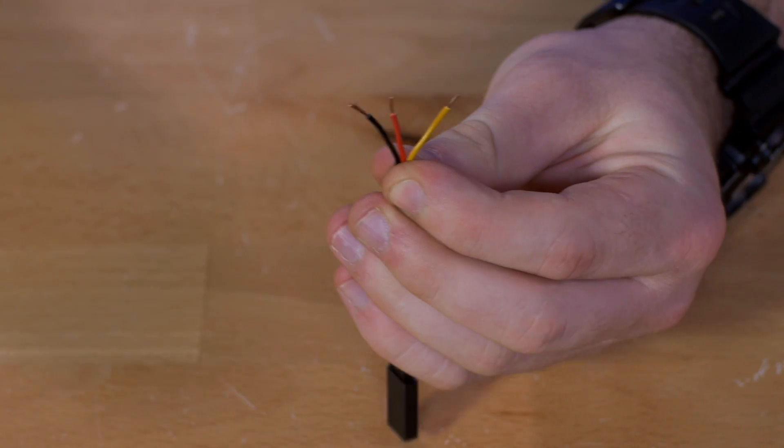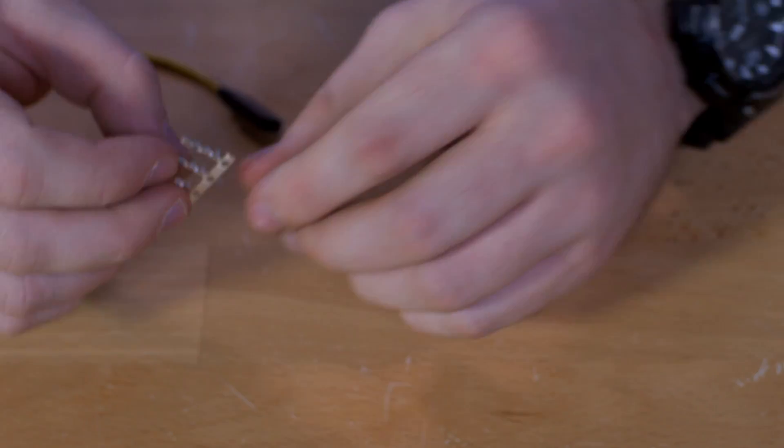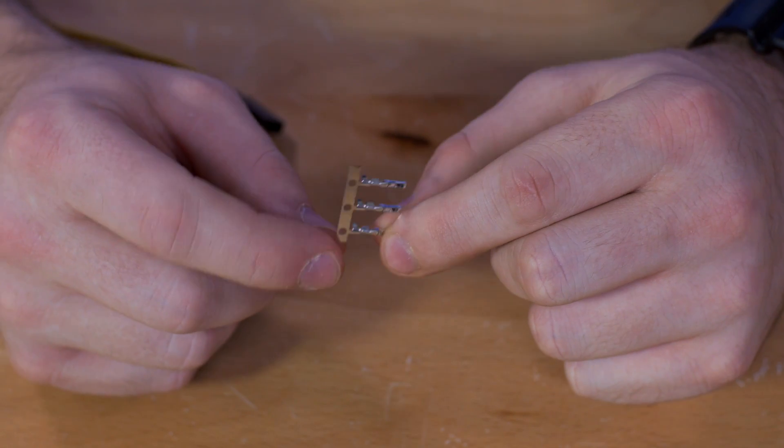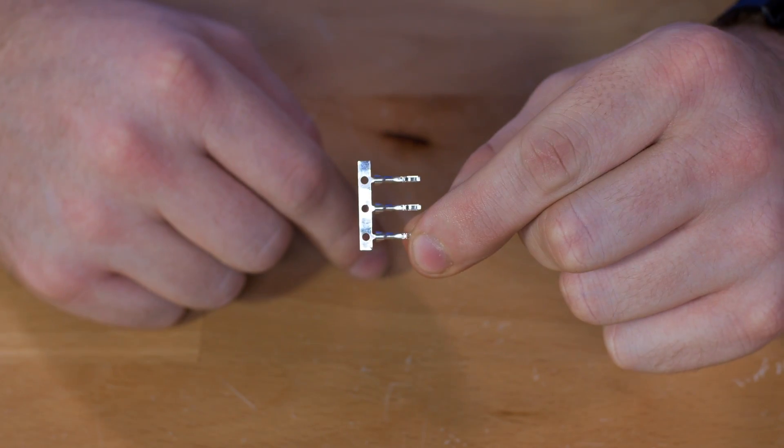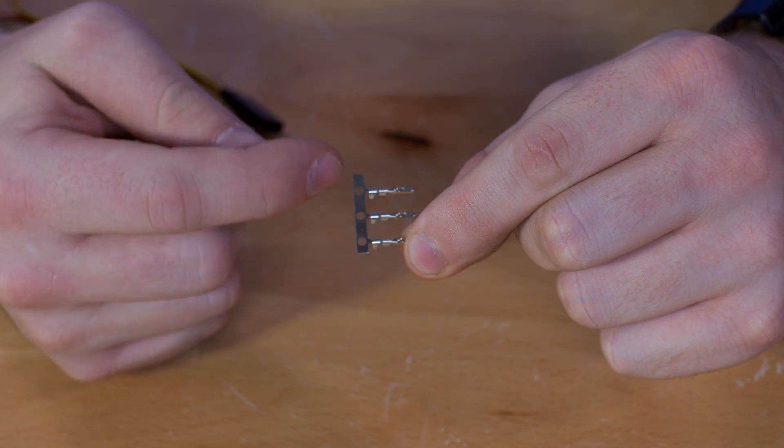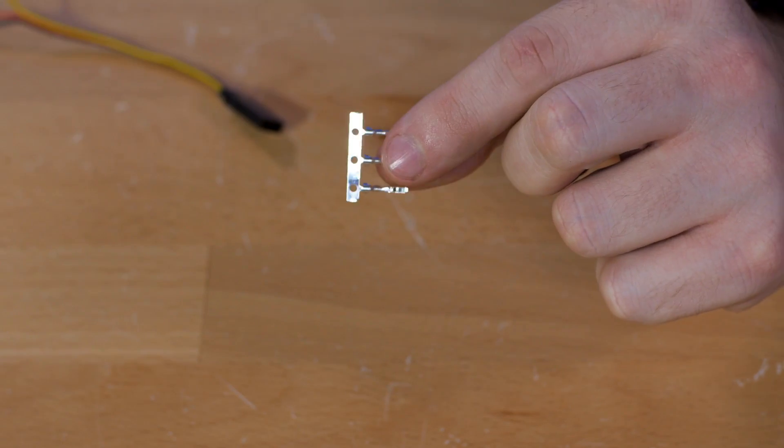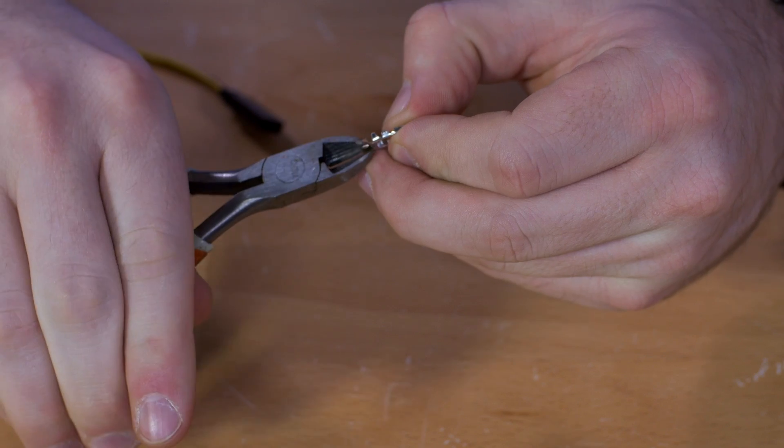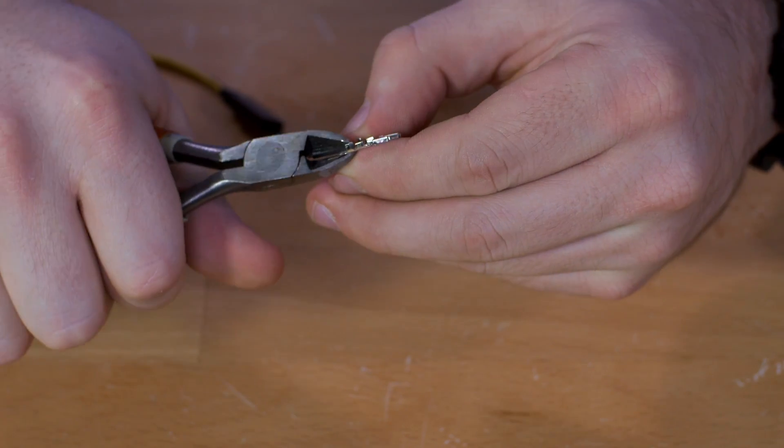Alright, so once you have those stripped, we're going to grab our pins and separate them into their individual three parts, leaving this little tab here on the end as we cut those apart. What that's going to do is give us something to hold on to as we feed those into the pin crimper.